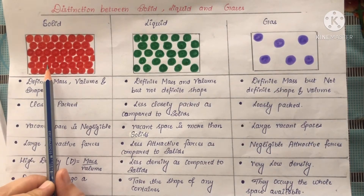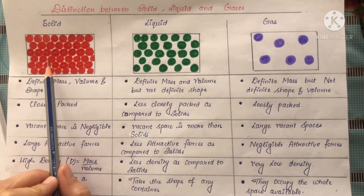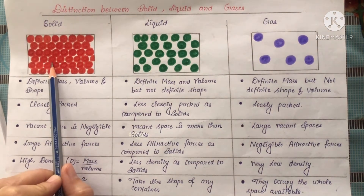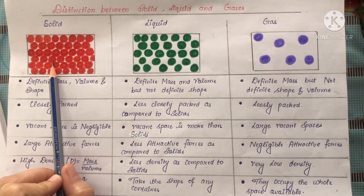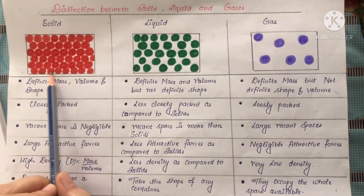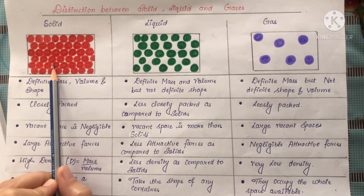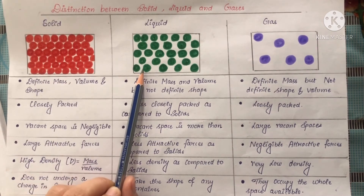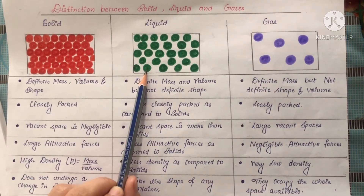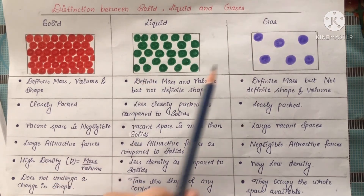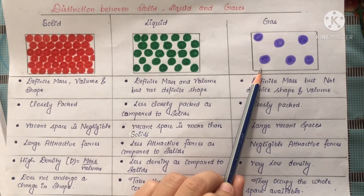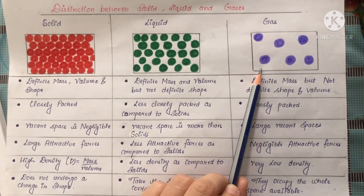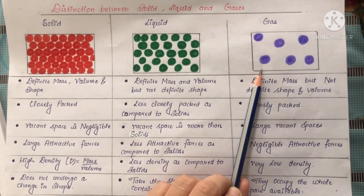Look at here — this is the arrangement of solids, means in solid the particles are arranged in this manner. This is the arrangement of the particles in case of liquid, and this is the arrangement of the particles in case of gases.